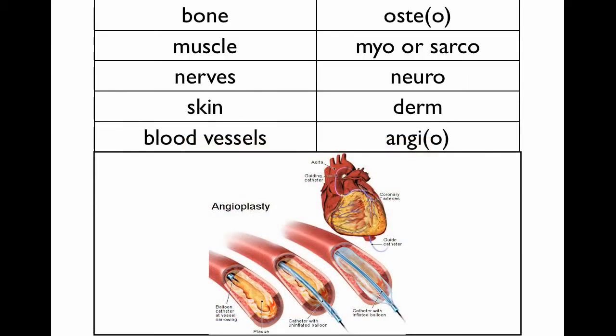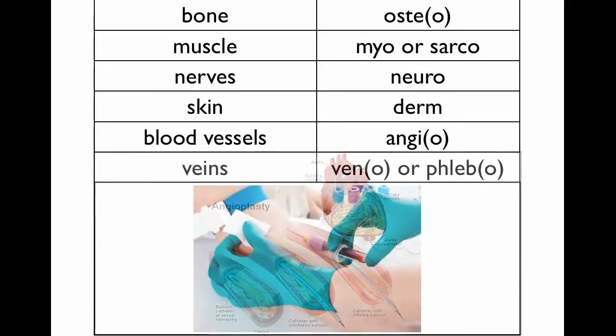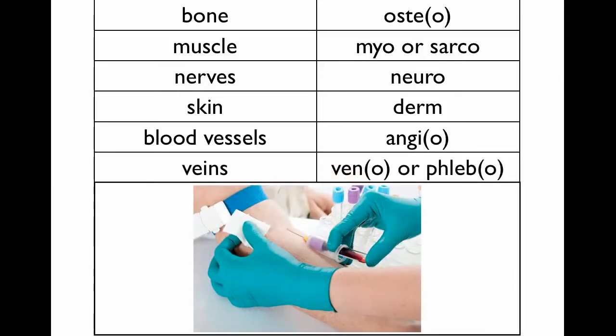For blood vessels, you'll often see the term angio. You've hopefully heard of angioplasty, which is the insertion of a small catheter with a balloon that is inflated to create space inside an occluded vessel. For veins, we have veno or phlebo, like a phlebotomist — someone who draws blood for their profession.